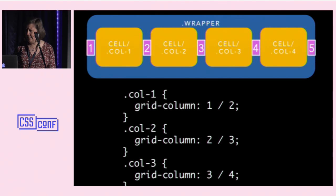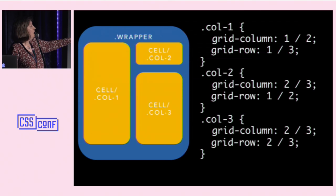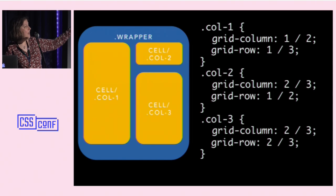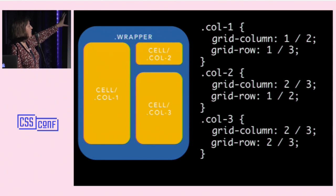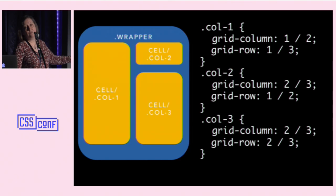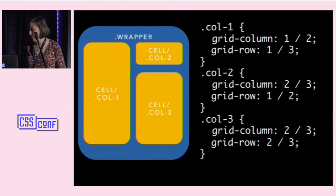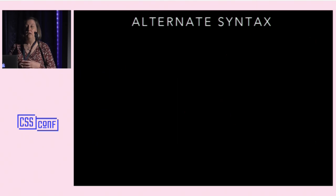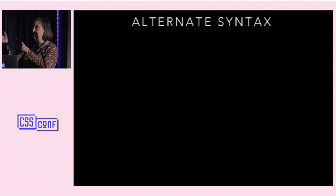A slightly more complicated example: what happens if you have a layout where things go down the page and things sit next to it? You can do that with the grid-row property. So this thing on the left in column one is going to go from row one, skip two, down to three — so one slash three for that location on the page. There's also individual property syntax with grid-column-start, grid-column-end, grid-row-start, and grid-row-end, but nobody's going to type all that.